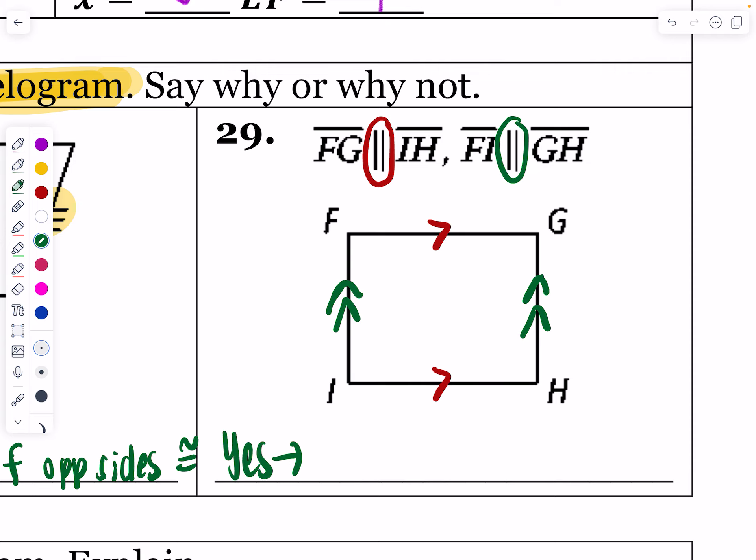This is just the straight up definition of a parallelogram - both pairs of opposite sides are parallel. So since both sets of opposite sides are parallel, we are able to say that this is in fact a parallelogram.